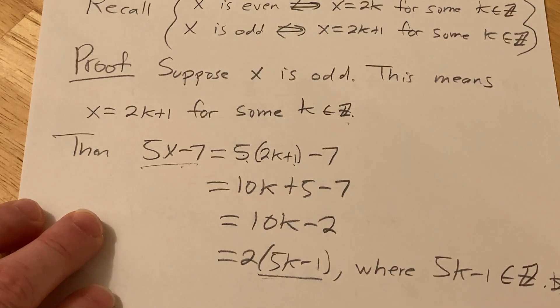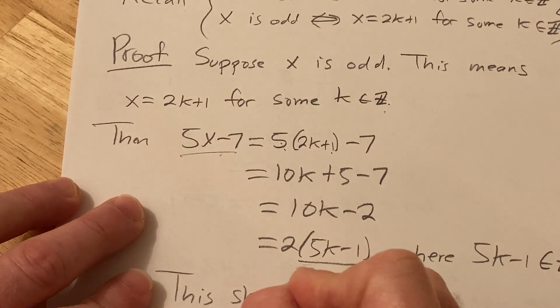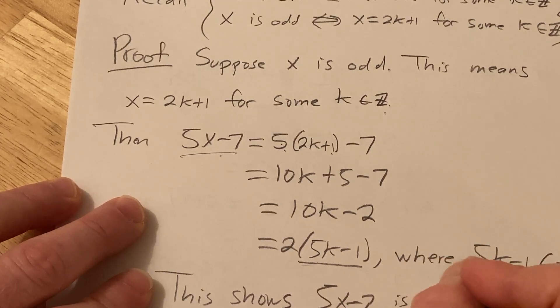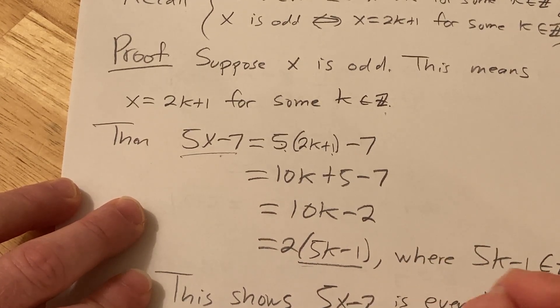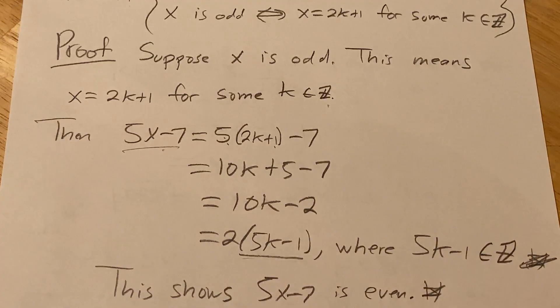I probably could have said something here. Like this shows, 5x minus 7 is even. And that completes the proof. I mean, it's a little bit better to say that at the end there, a little bit more. I hope this has been helpful. Good luck.